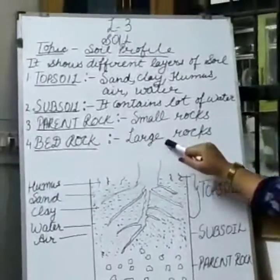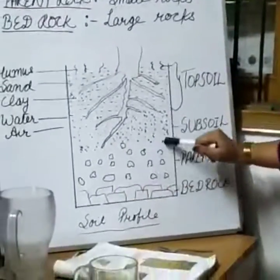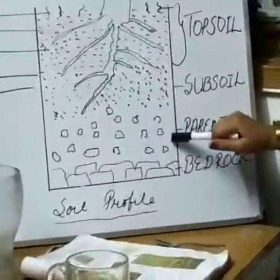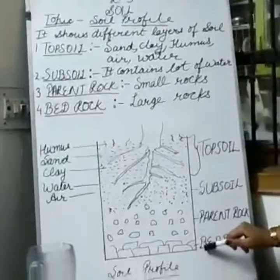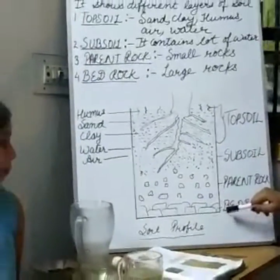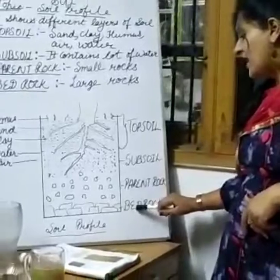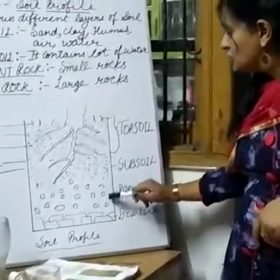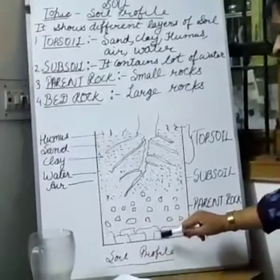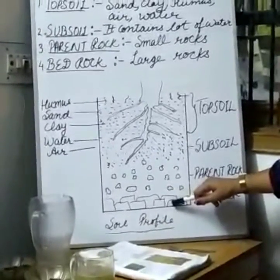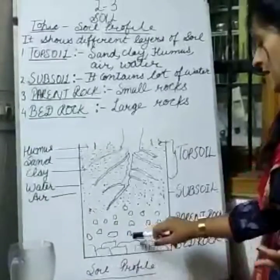The bottom layer is called bedrock. Below parent rock, the layer is bedrock. What is bedrock? Bedrock is made up of large rocks. It goes very deep inside the earth. These rocks are made up of igneous rocks, metamorphic rocks, and sedimentary rocks.